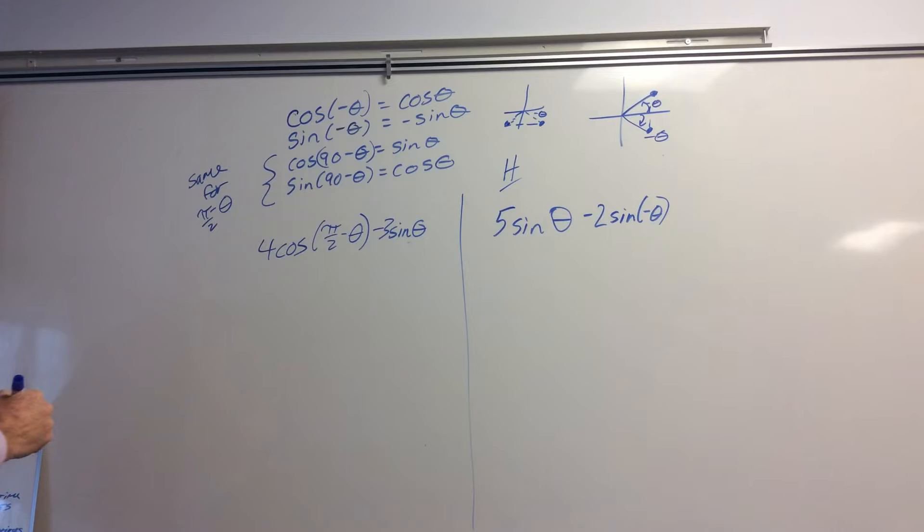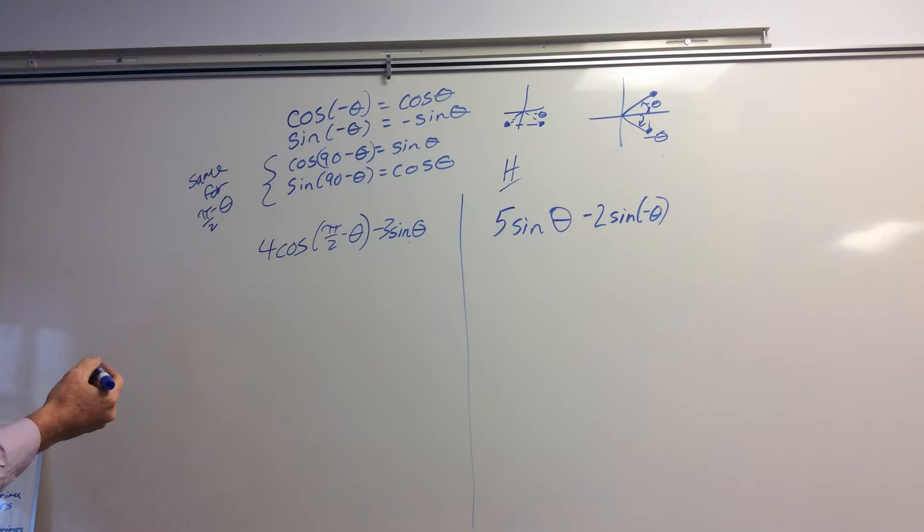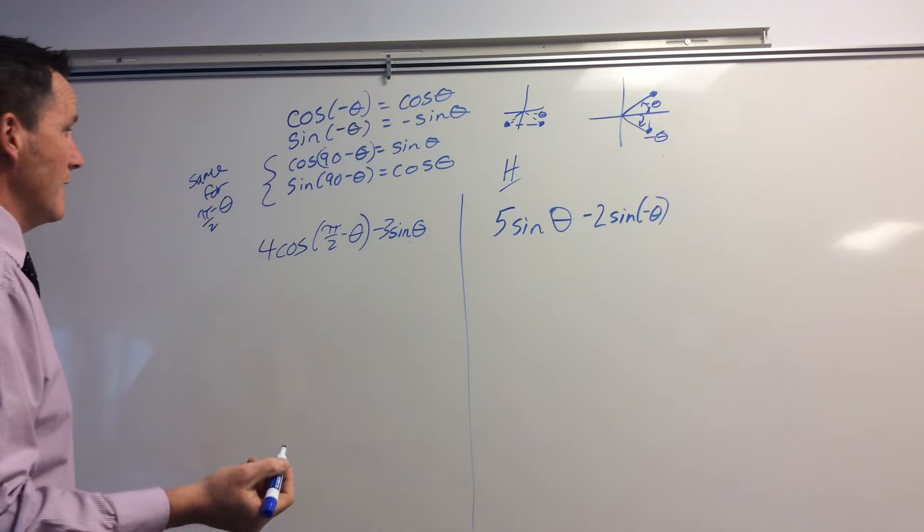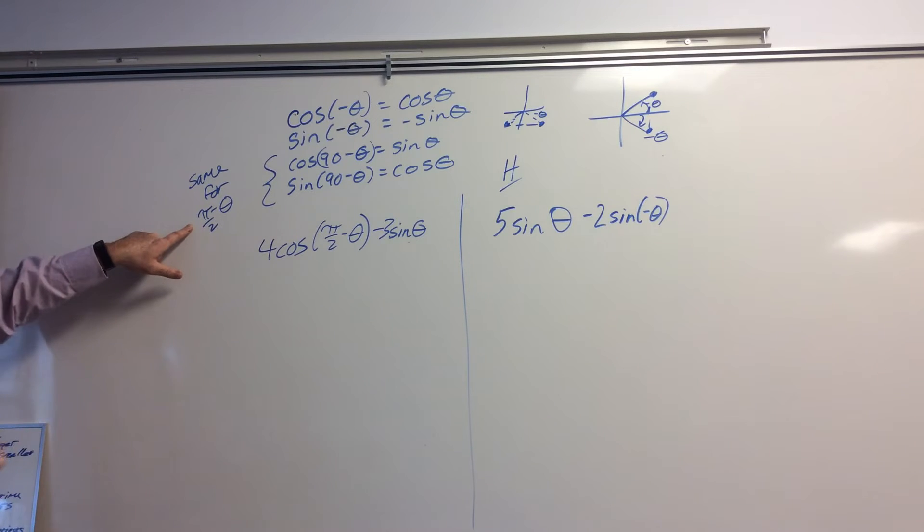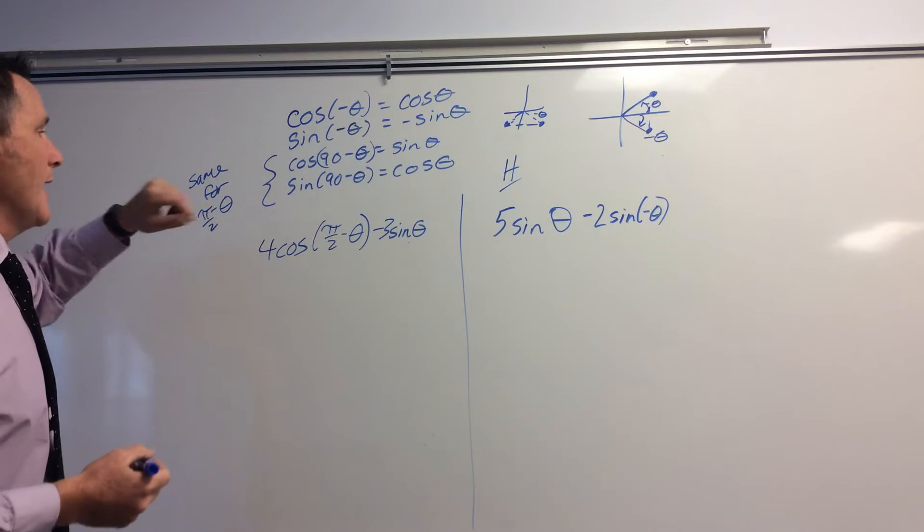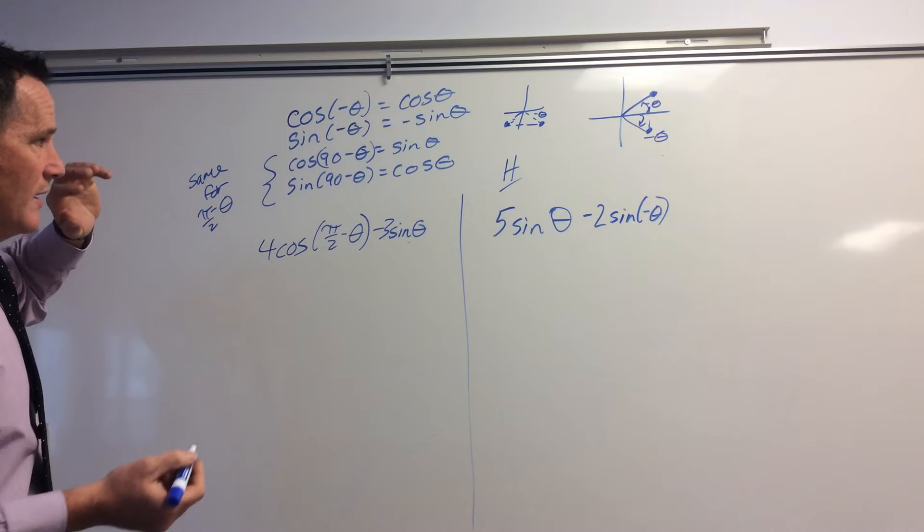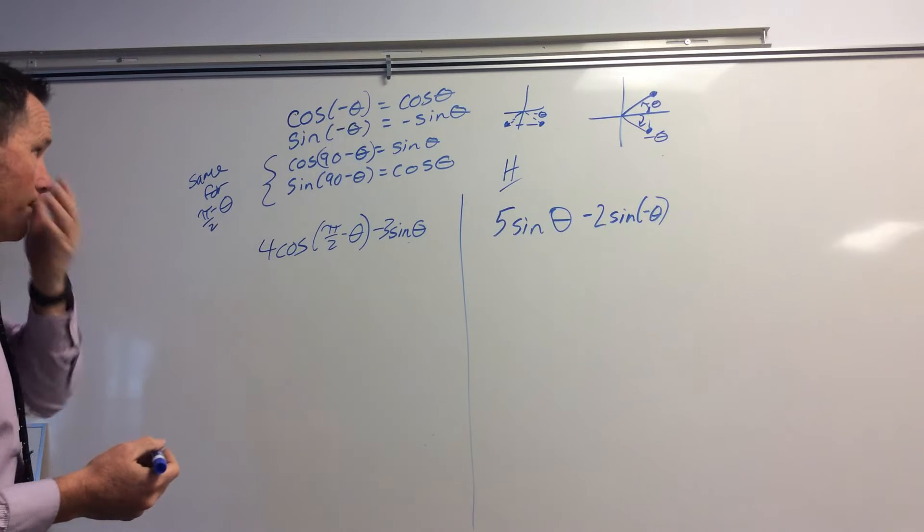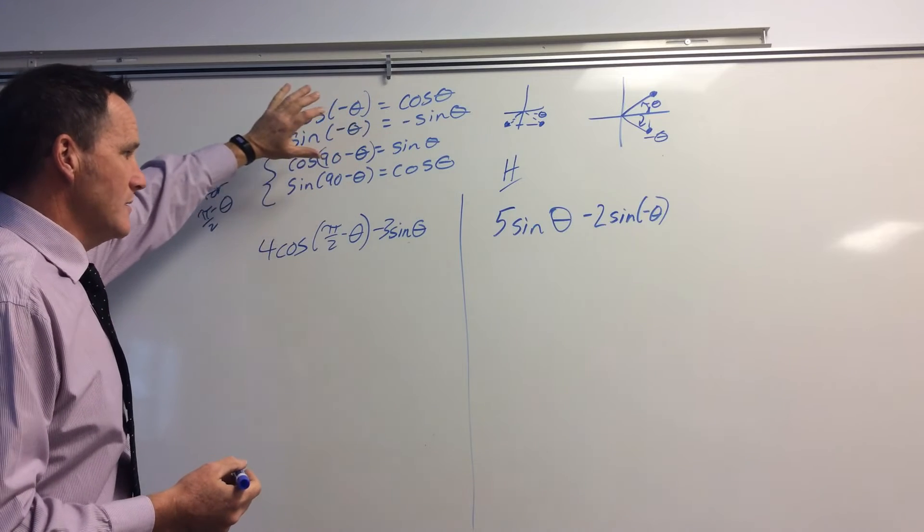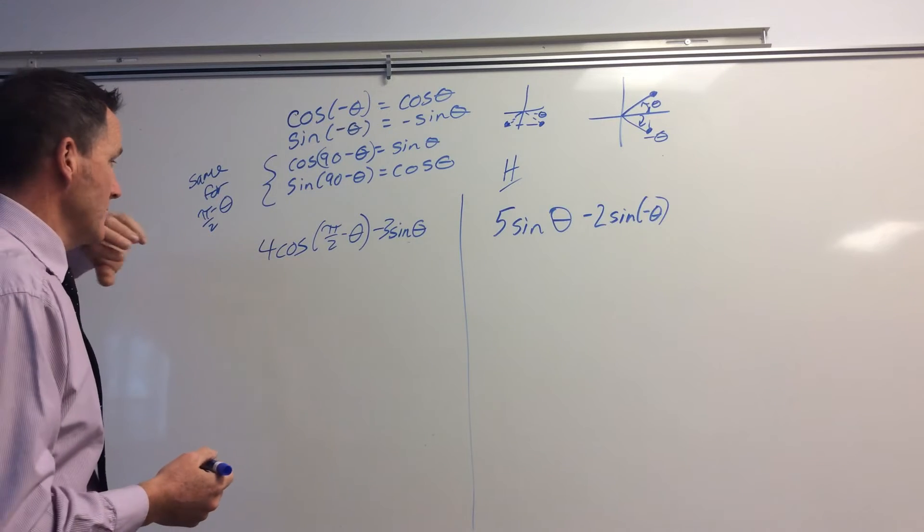So following that, I also have these other two rules. Cosine 90 minus theta is sine theta, or you can look at it as pi over 2 minus theta. And sine 90 minus theta is cosine theta. So I use these four little equations to help me solve some of these problems.